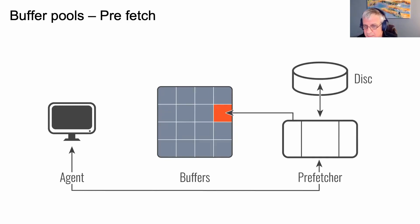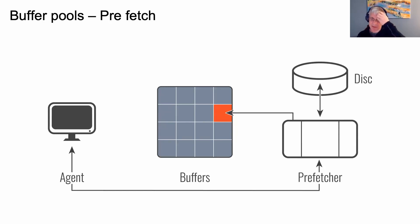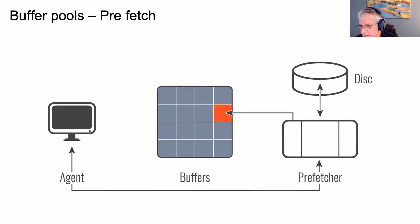One technique that most buffer mechanisms use is what we call a pre-fetcher. Often data is read sequentially, so when we read one row of data the next thing we'll do is read the next row. Reading back blocks of information from disk is often far more efficient, so we pre-fetch — collecting a large number of rows into the buffer pools. As the sequential read proceeds, there's no need to go back to disk. This does require some intelligence within the pre-fetcher, and we see varied results between different buffer pool implementations because of the level of optimization involved.